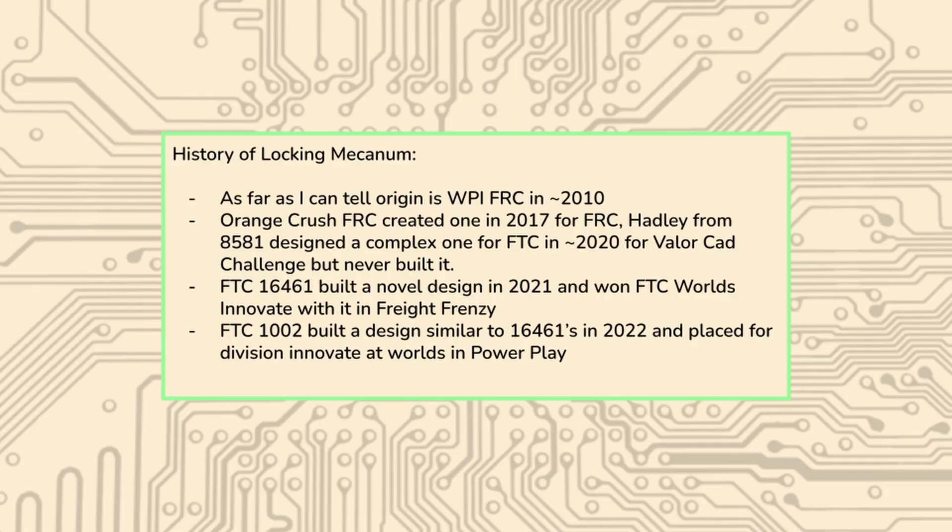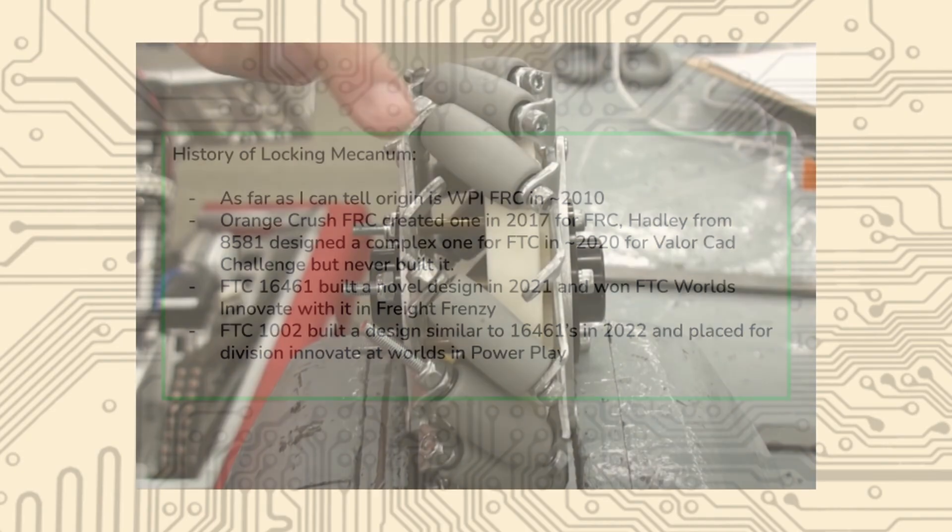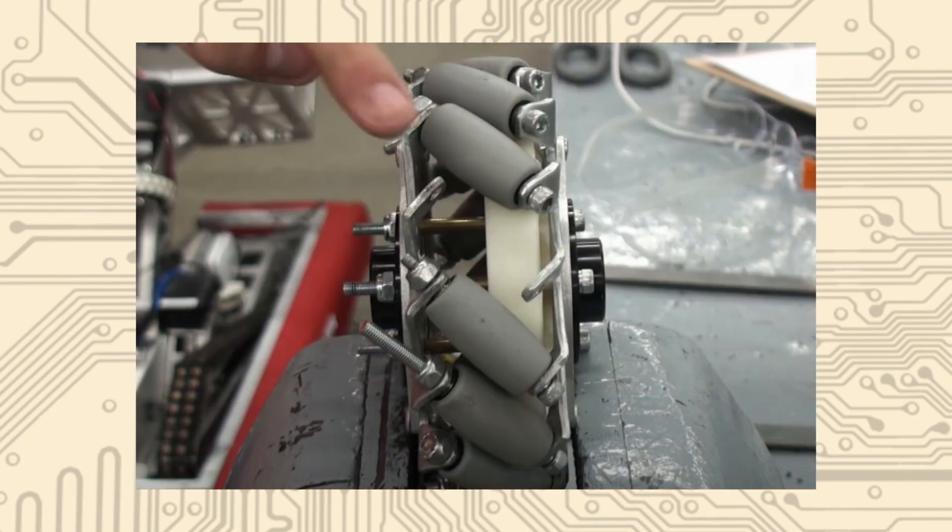I could also talk about the history for a very long time, but as far as we can tell, the origin is WPI FRC in around 2010. They designed the first one, it was a pneumatic brake pad that moved linearly. Orange Crush FRC also created one that was a very similar design in 2017. Both WPI and Orange Crush did these in eight inch wheels. It's ironically a little bit easier to do locking Mecanum in FRC because of space constraints.